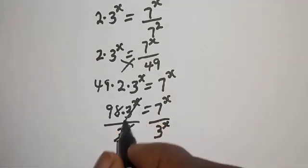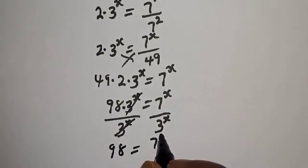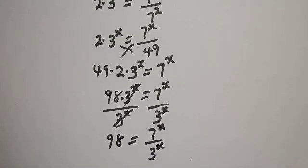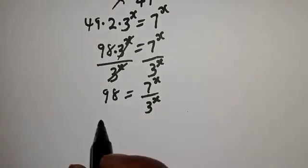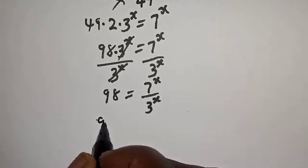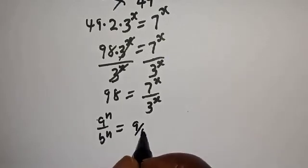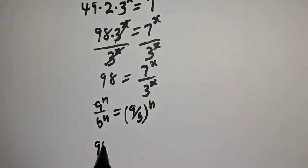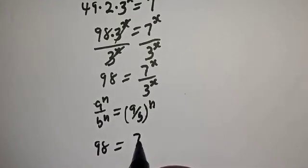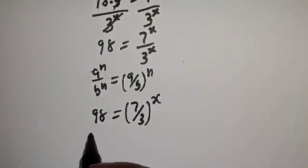So this will cancel. We get 98 is equal to 7 raised to power s over 3 raised to power s. Take note of the exponential rule: if you have a raised to power n over b raised to power n, this is equal to a over b to the power of n. So we have 98 is equal to 7 over 3 raised to power s.